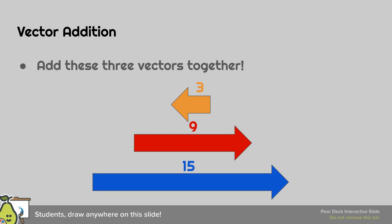Add these three vectors. We can add these two together: 9 plus 15 gives us 24. Then this one's going in the opposite direction, so we're going to subtract 3, gives us 21.